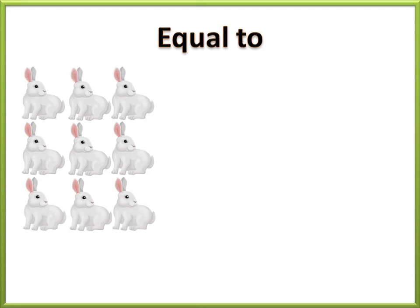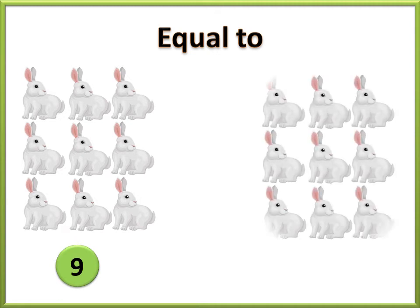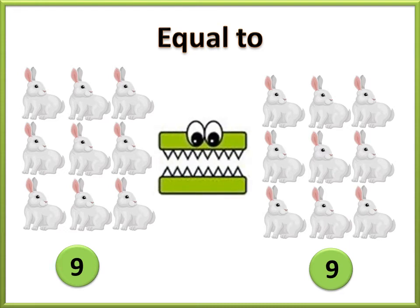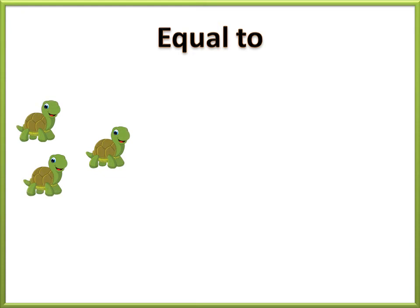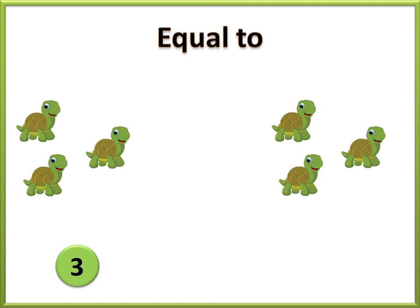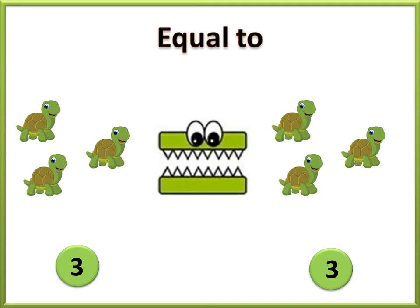Let us count the number of rabbits. Nine. Nine. We have the same number. So, we use the equal to sign. Three. Three. We have the same number. So, we use the equal to sign.